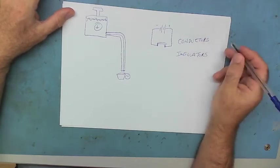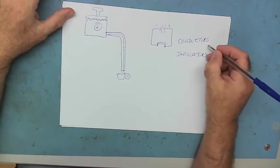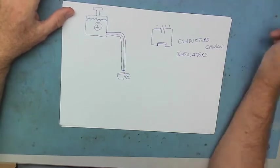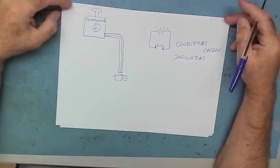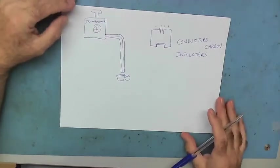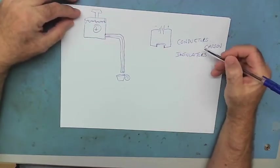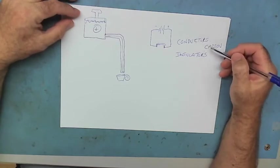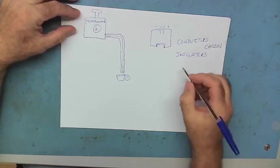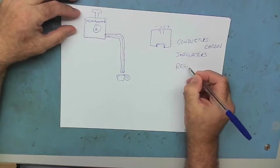Then they found some things which are in between - conductors but just not very good conductors. A good example is carbon. They called this property resistance.